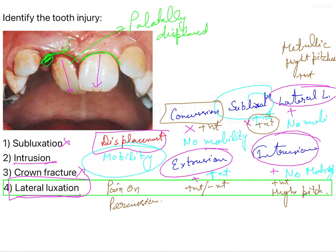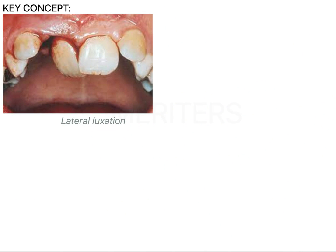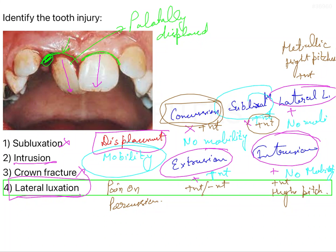Regarding treatment: concussion does not need any specific treatment — just symptomatic treatment like ibuprofen or NSAIDs. For subluxation, lateral luxation, and extrusion, you have to splint the tooth for two weeks. Intrusion requires splinting for almost four weeks. So the answer is clearly option four, lateral luxation, as the tooth has been displaced laterally.